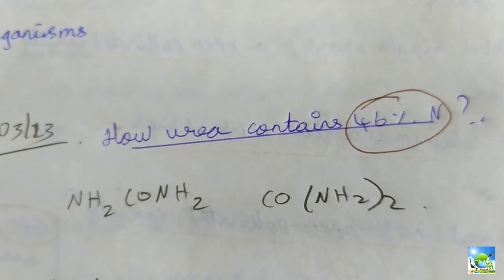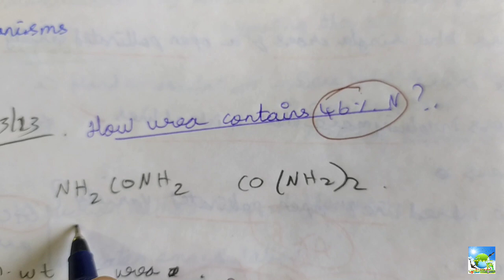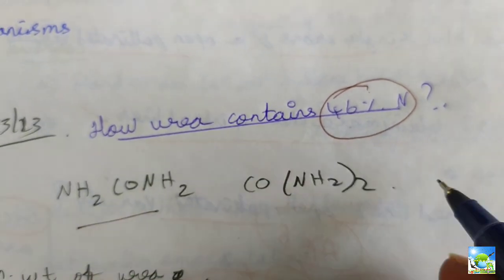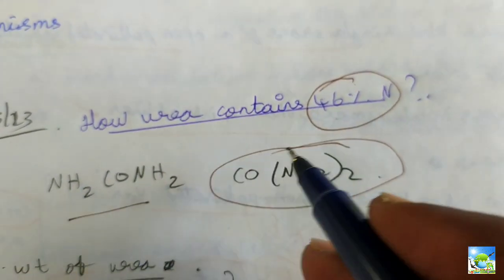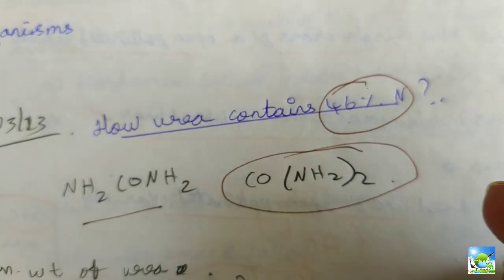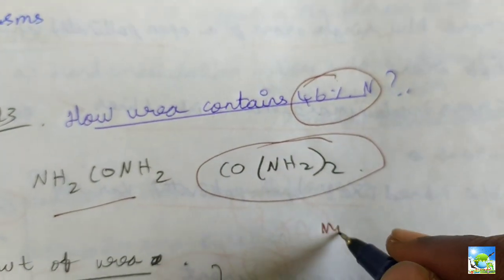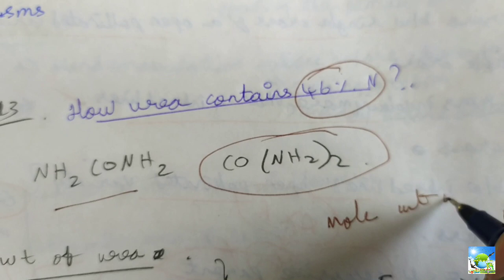We know that the formula for urea is NH2, CONH2. We can write this in this form, that is CONH2 twice. For that we need to know the molecular weight of urea.